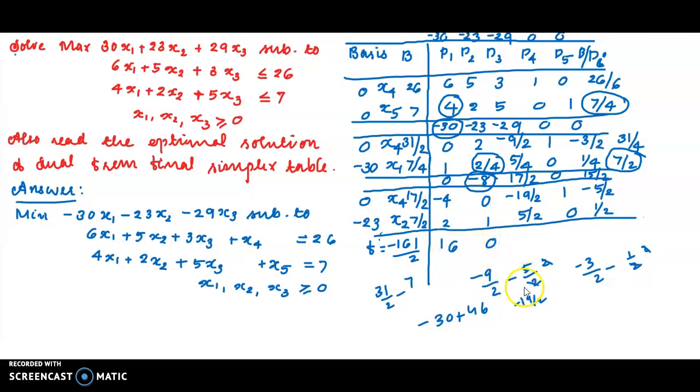The basic is 0. Next one, the net evaluations, 0 into minus 5 by 2 plus 23 into 1 by 2, 23 divided by 2. All the net evaluations are non-negative, then optimal solution of primal is reached. Primal. We will multiply the minus sign.